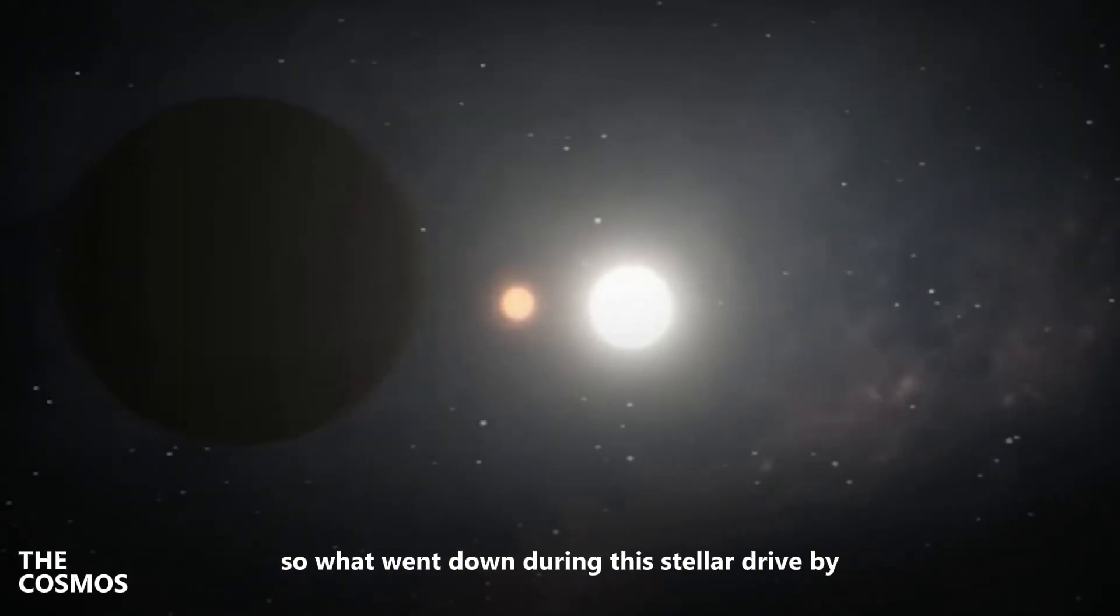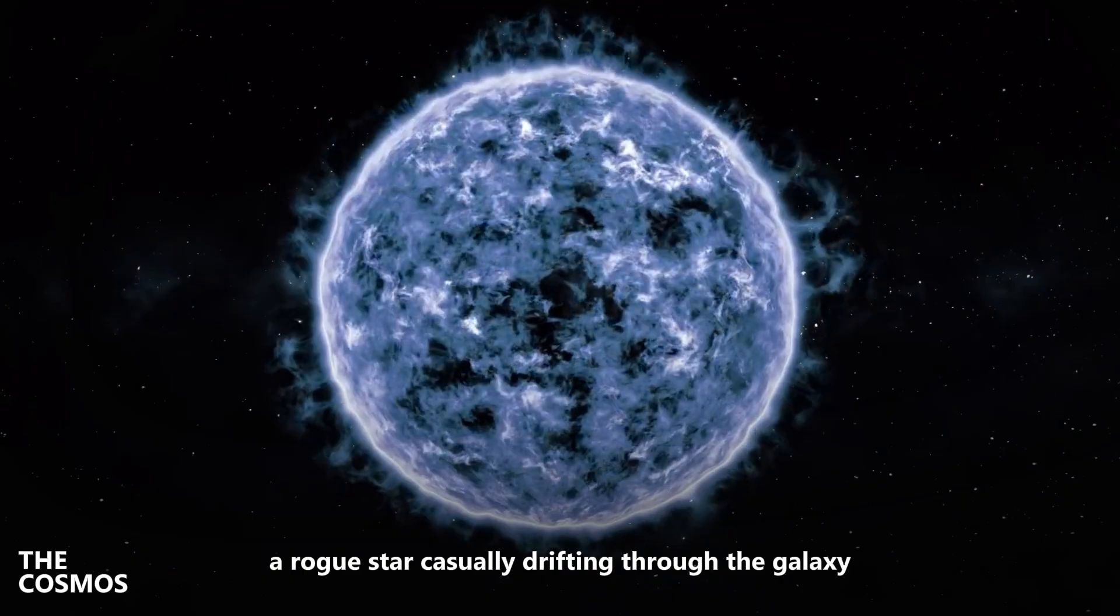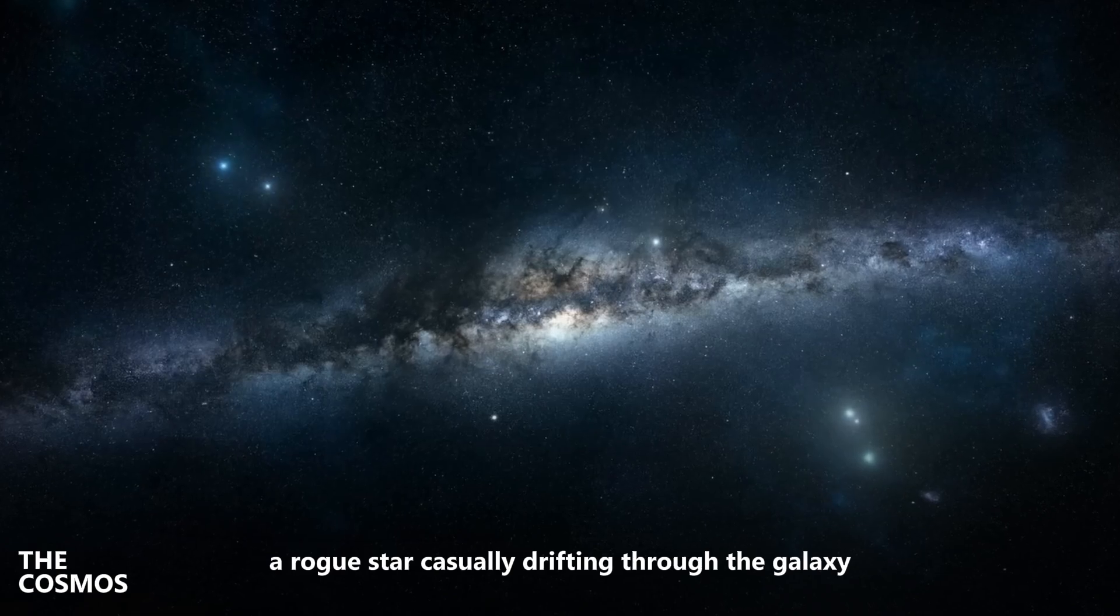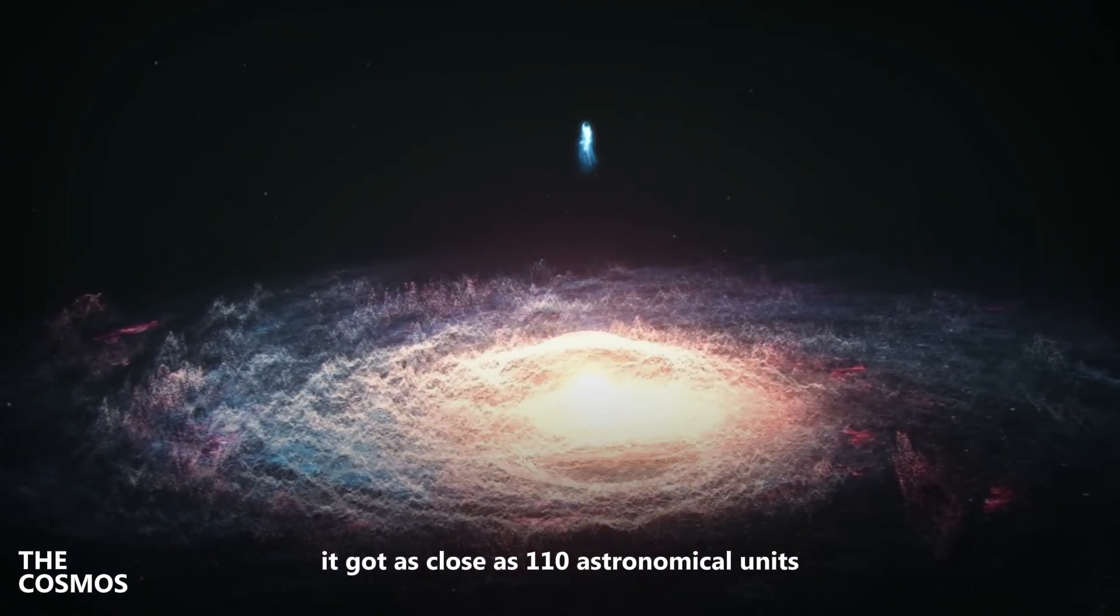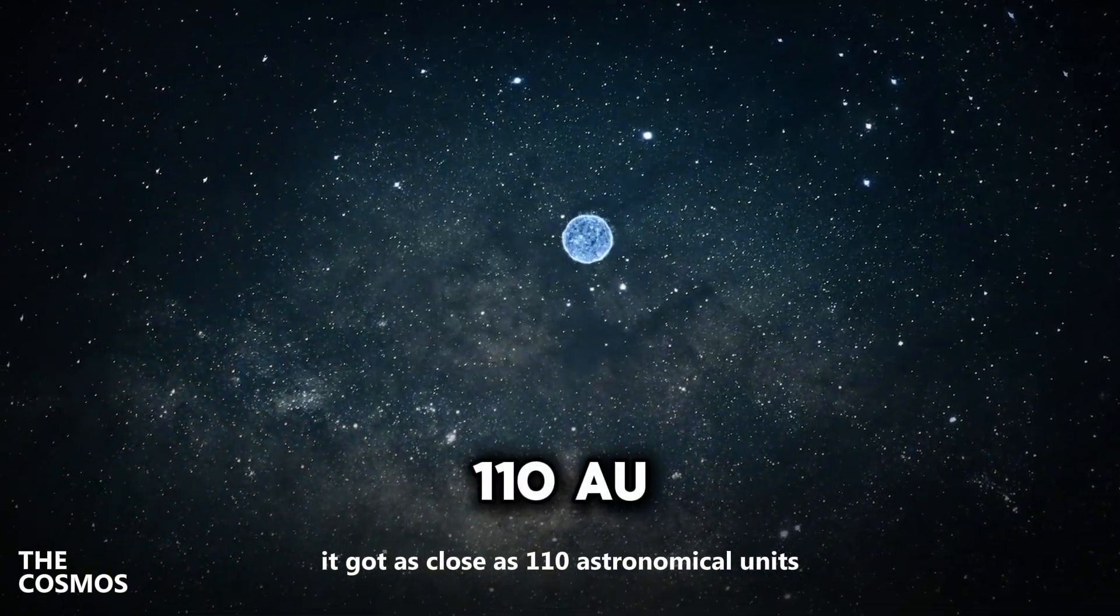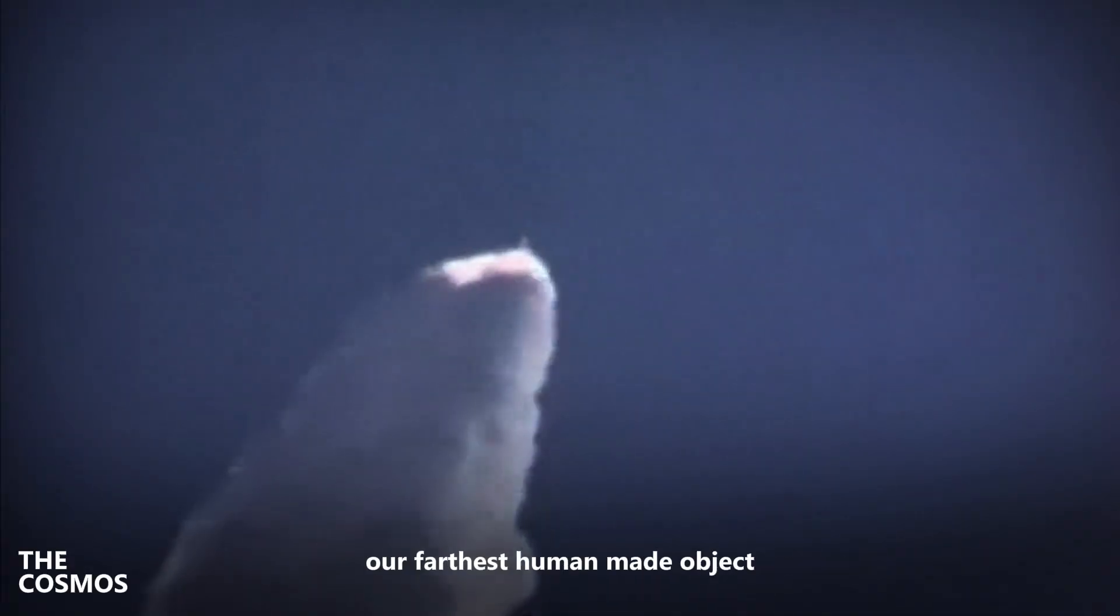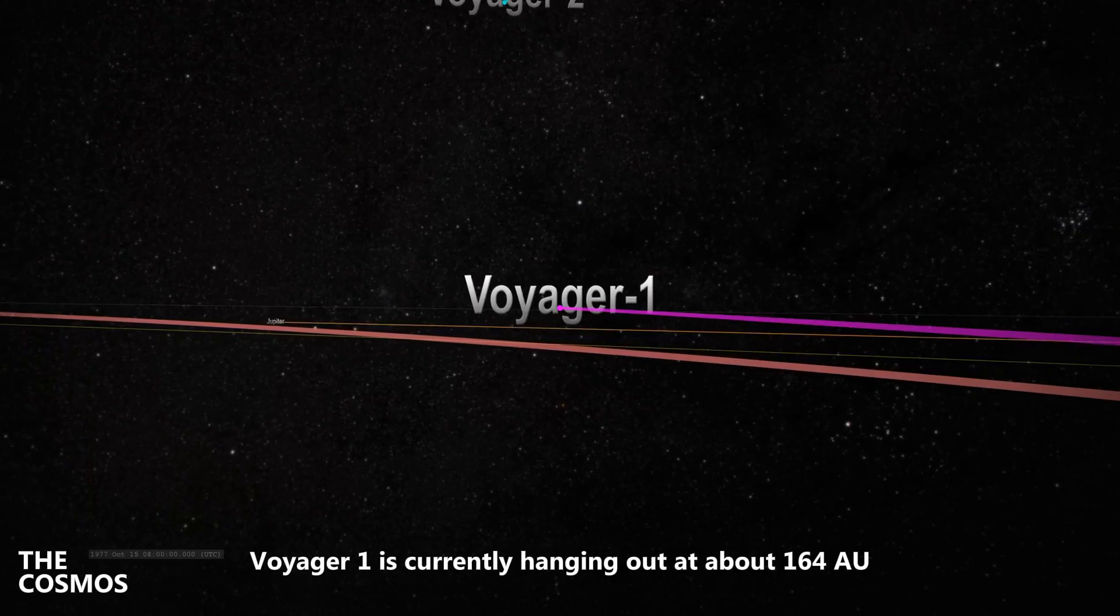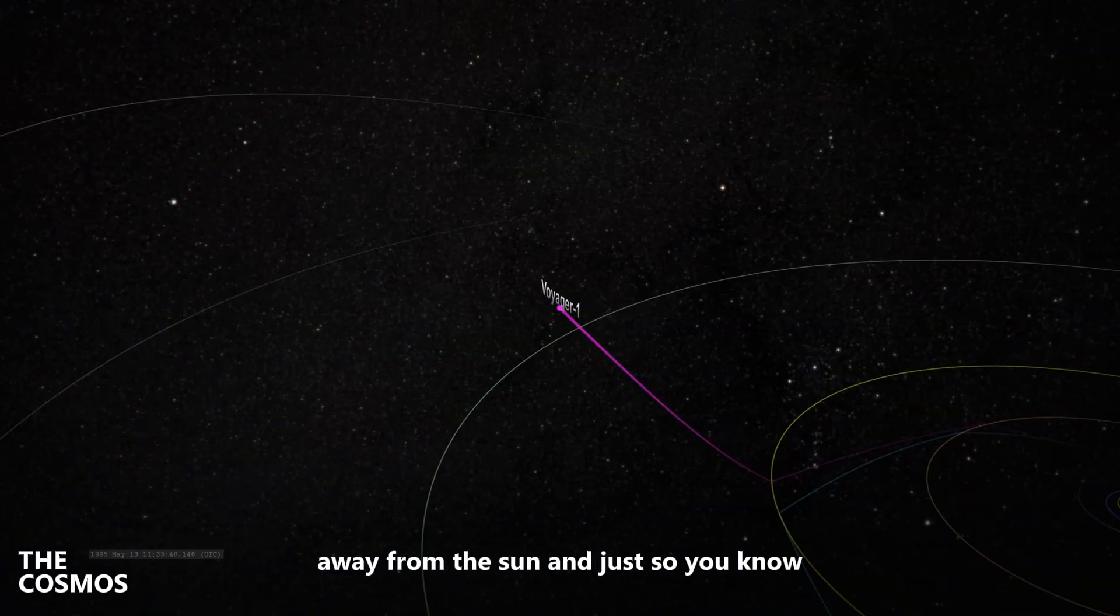So what went down during this stellar drive-by? Picture this: a rogue star casually drifting through the galaxy decides to swing by our neighborhood. It got as close as 110 astronomical units from the sun. To put that in perspective, our farthest human-made object, Voyager 1, is currently hanging out at about 164 AU away from the sun.